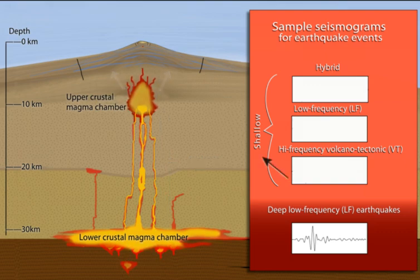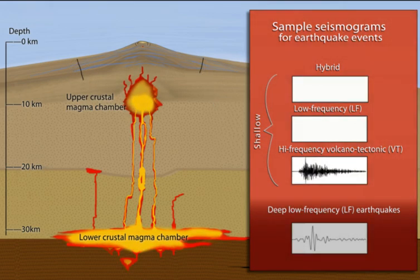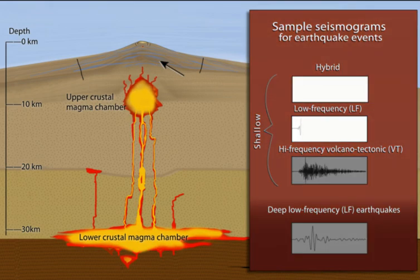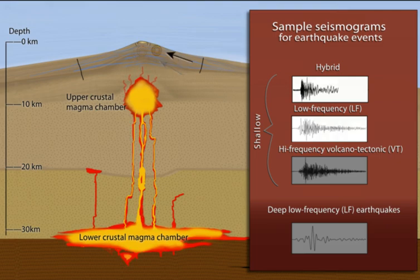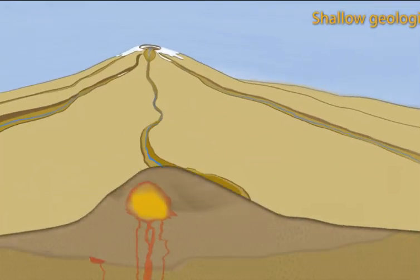At shallow levels in the upper crust, common seismic events include high-frequency volcano tectonic or VT earthquakes, shallow low-frequency earthquakes, and hybrid earthquakes just below the summit. Before we focus on the shallower processes, we notice the layers and forces that affect how and where different earthquakes occur.